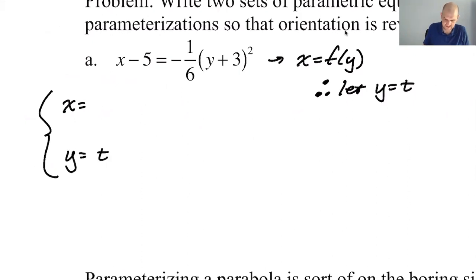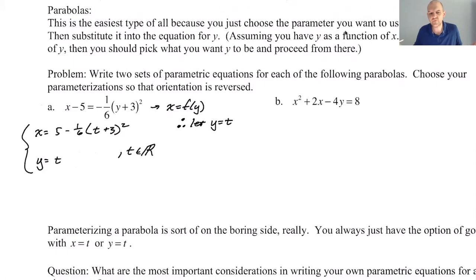If y is equal to t, then x is going to be, I have to bring this over, so I'm going to say it is 5 minus 1/6 the quantity t plus 3 squared. And then t is an element of the reals. That'll do it. So I'm going to graph these in a second. I'm going to graph them in GeoGebra so we can really watch things happen.